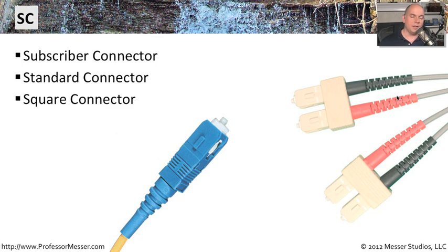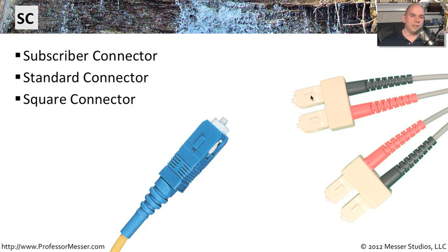SC connectors are color-coded to signify which side is for send and which is for receive. There's a bracket available that connects them together so you don't mix up which side goes to which. They also have a notch on top so they can only plug in one particular way, and the port on your network equipment has a matching slot for that notch. It is a very easy type of fiber connection to use, though it does take up a lot of real estate on your devices.